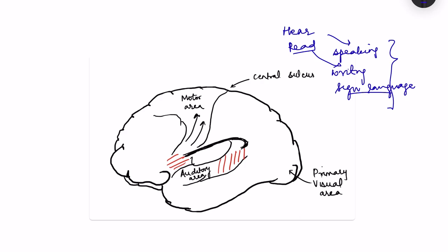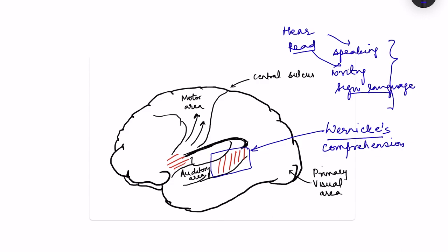So for this there are various areas. Let us see what these areas are, how they interact, and if there is damage to these areas what will be the problem. The first important area is Wernicke's area. This area is important for comprehension, that is understanding the speech. It is located in the superior temporal gyrus, just posterior to the auditory area. In Brodmann's area terms, it is area number 22.